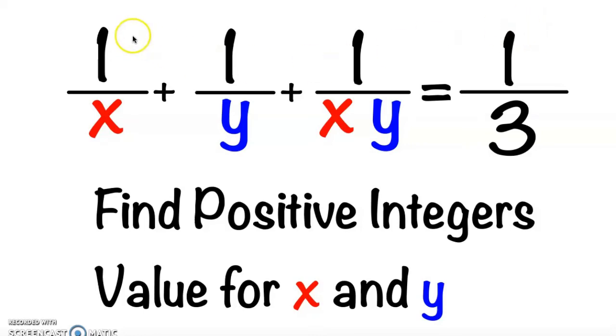Hi all, it's super easy math. Given the following equation: 1 over x plus 1 over y plus 1 over xy equal to 1 over 3, we need to find the value of the positive integers x and y.